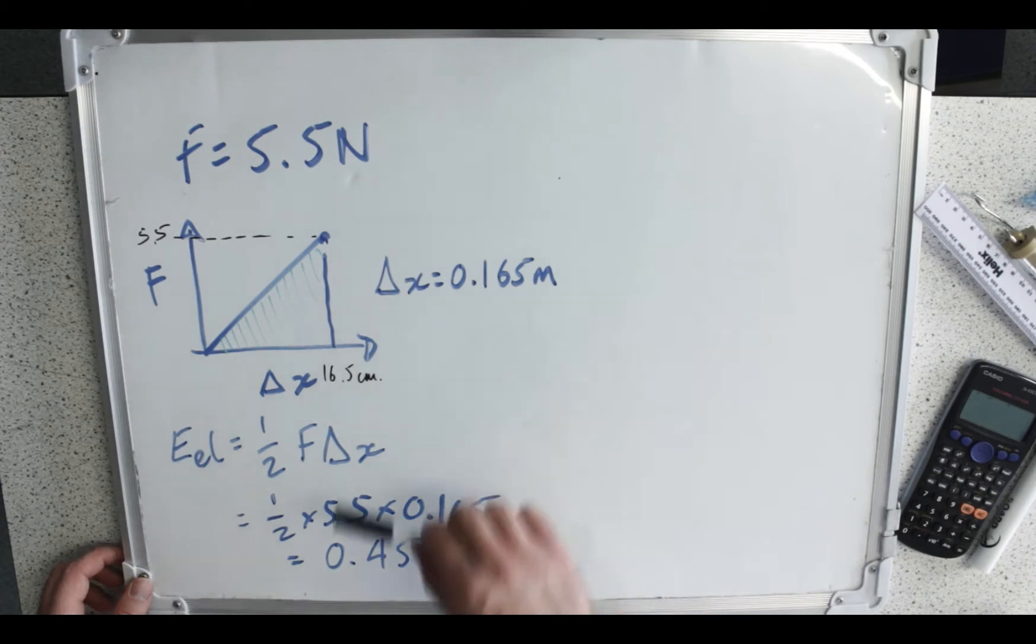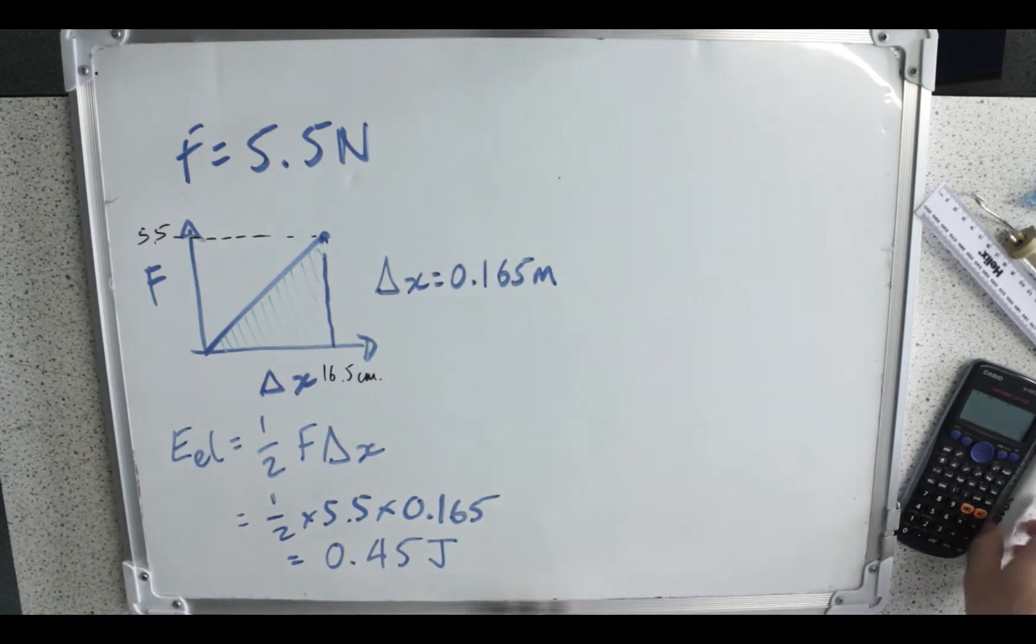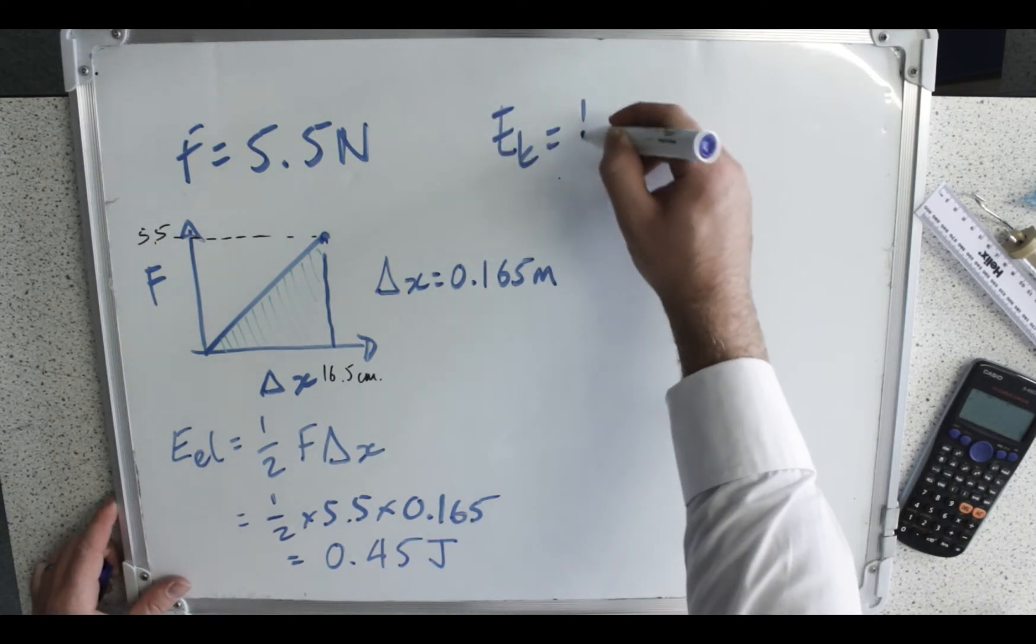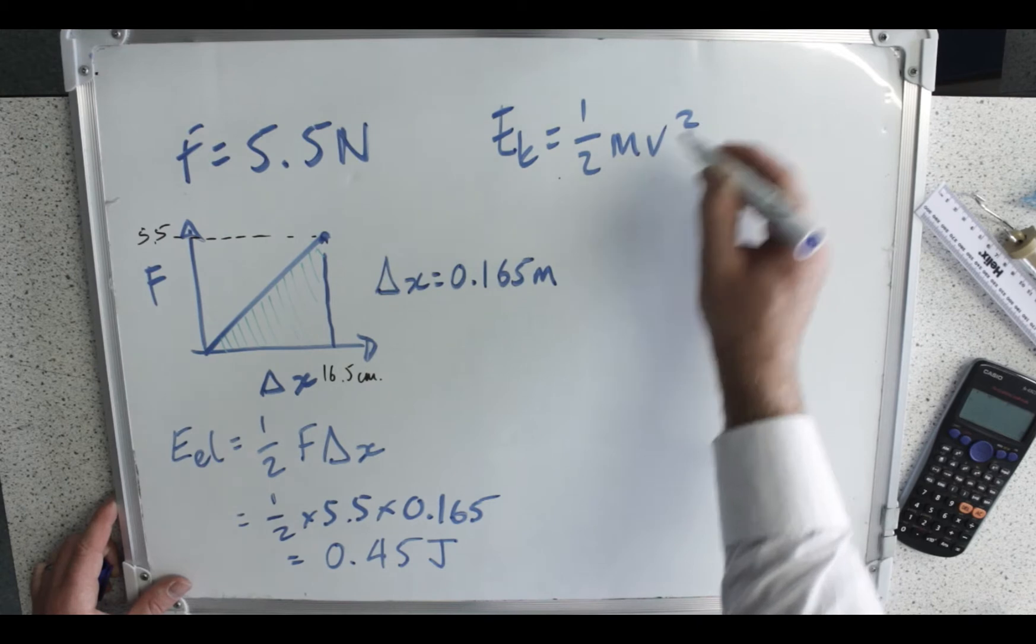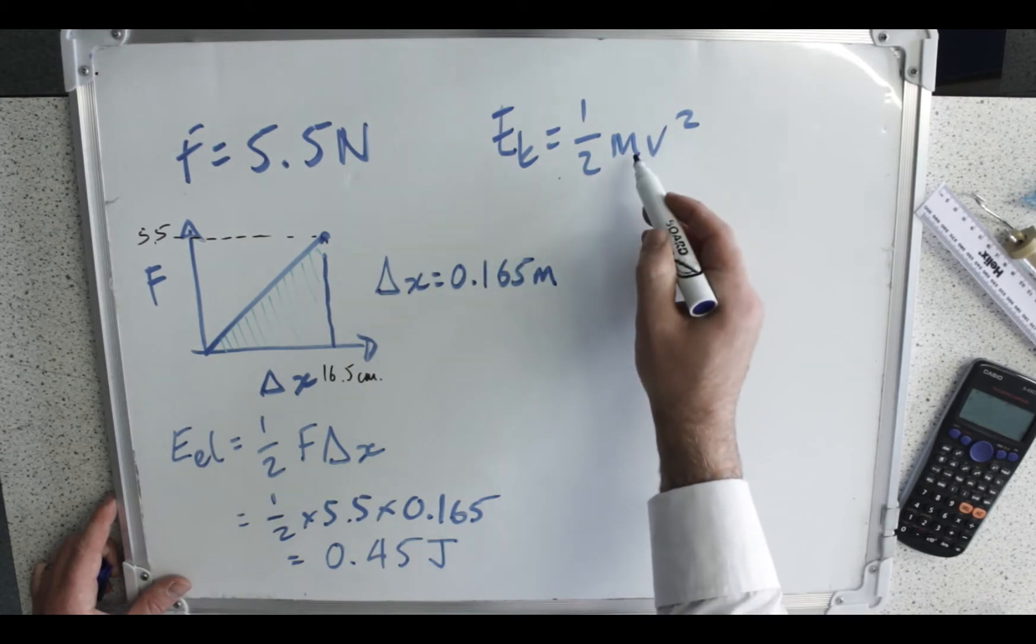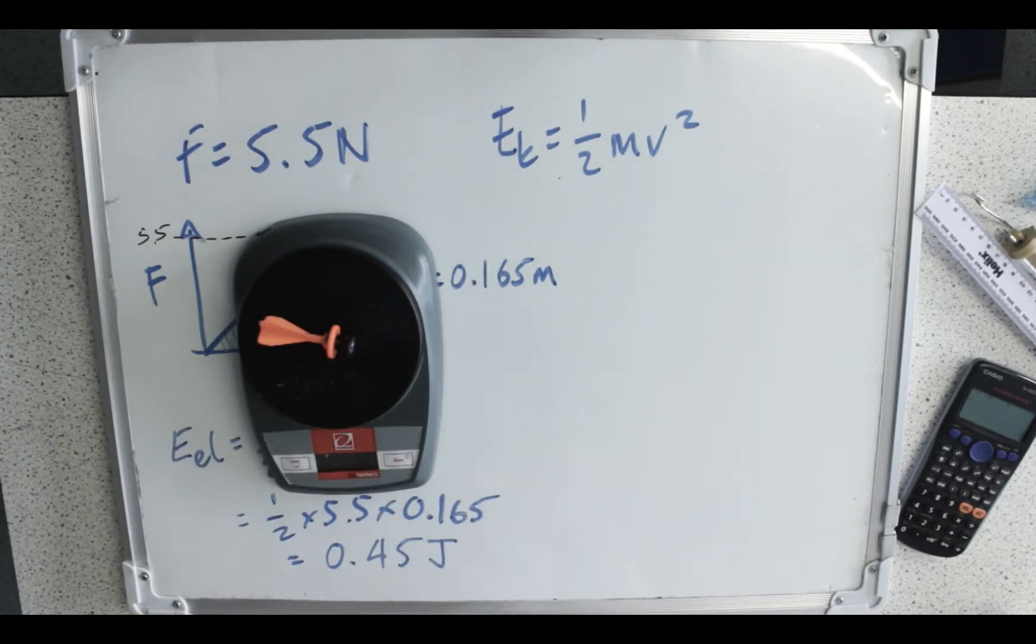So all of that is going to be converted into kinetic energy. And our equation for kinetic energy is kinetic energy is half mv squared. The next thing I need to measure is the mass, not obviously of the whole crossbow, just the bolt.